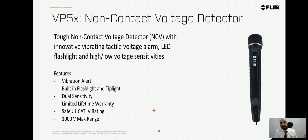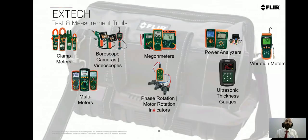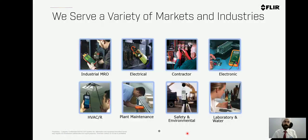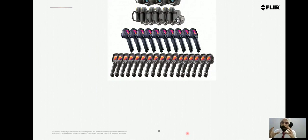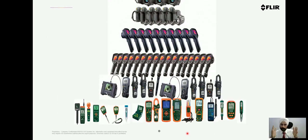X-Tech offers 450 different products including clamp meters, boroscopes, power analyzers, vibration meters, ultrasonic testers, phase rotation meters, multimeters, and earth resistance testers. These are used by industrial MRO, electrical contractors, electronics, HVAC, plant maintenance, safety and environment, and laboratory sectors. In summary, whether it is an SF6 gas leakage camera, the utility T1K camera, the EXX handheld, test and measurement range, or X-Tech products — almost 1,000 different products are available under the single Flare brand.